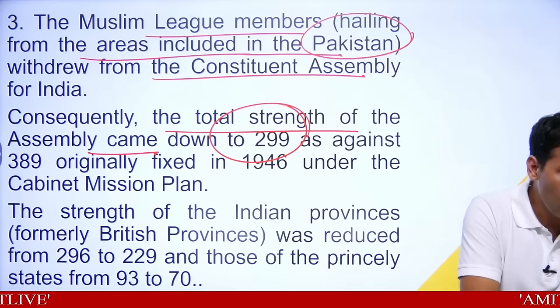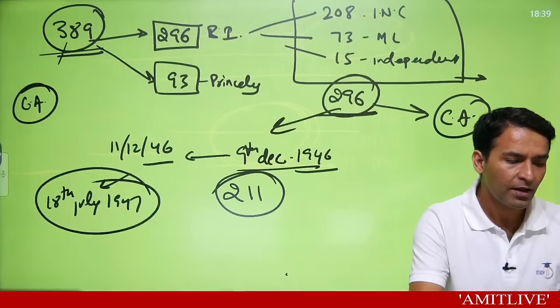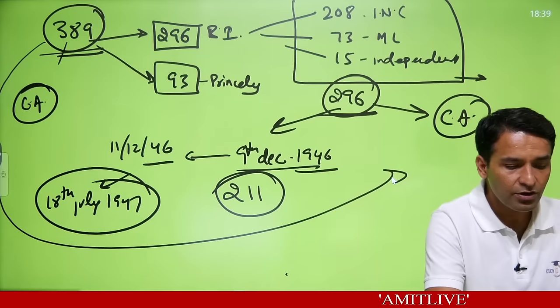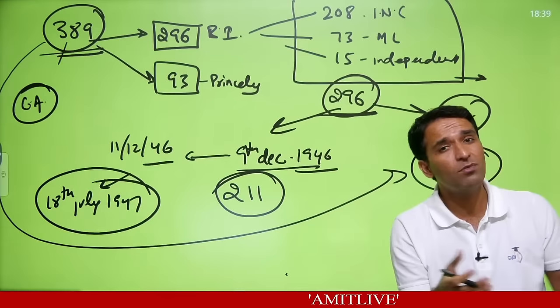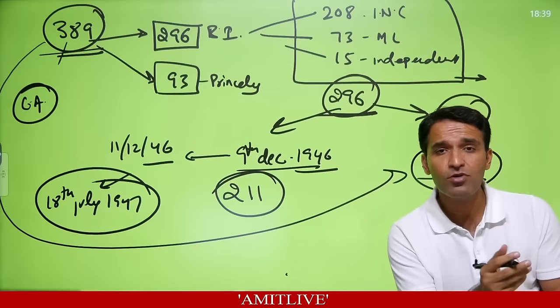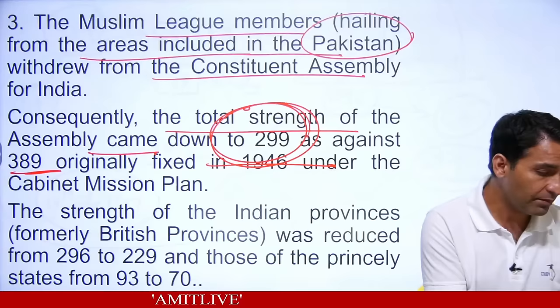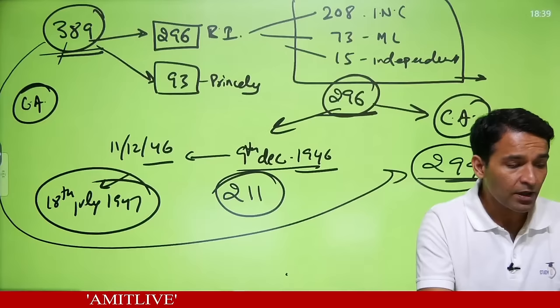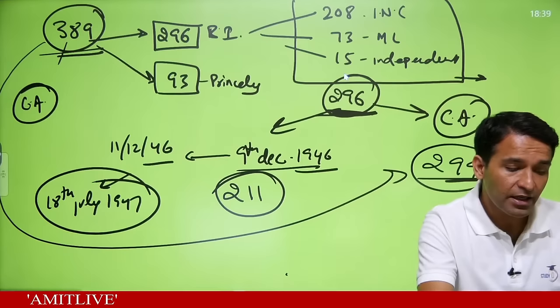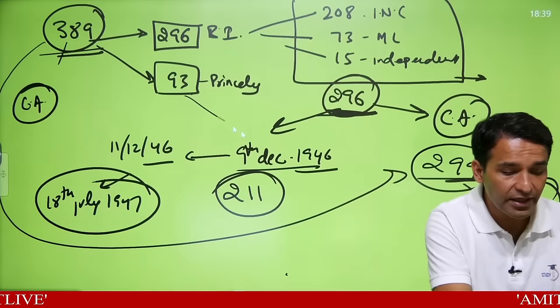From 389 the assembly was reduced to 299. Why? Because some areas went into Pakistan. The strength of Indian provinces was reduced from 296 to 229, and princely states from 93 to 70. India's total population at independence was about 29 crore 90 lakh, hence 299 members.